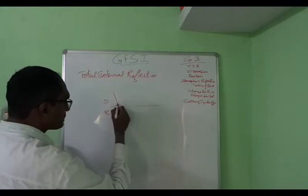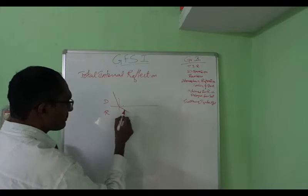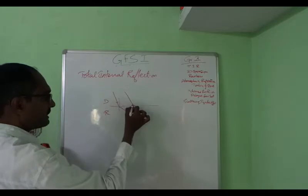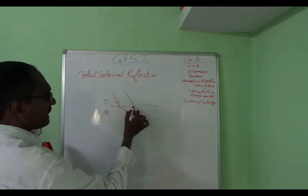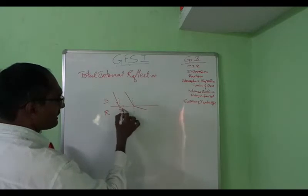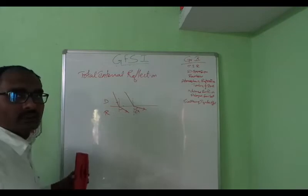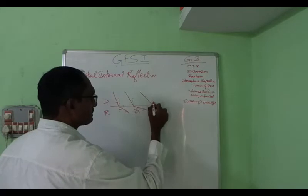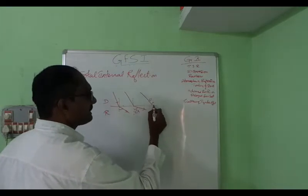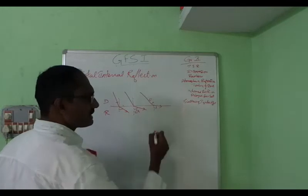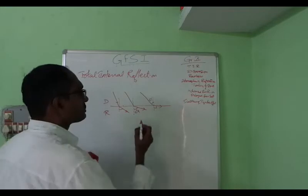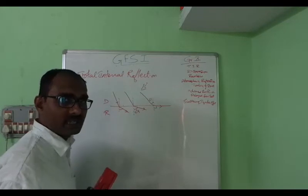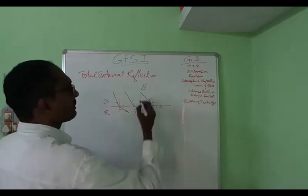Light ray coming like this — if this is the normal, it would bend away from the normal. If I increase the angle of incidence by a little, the angle of refraction also increases. If I continue like that, at a certain point, for a certain angle of incidence, the angle of refraction would be 90 degrees. That means the light ray would be traveling along the surface. This angle of incidence for which the angle of refraction is 90 degrees is called the critical angle.